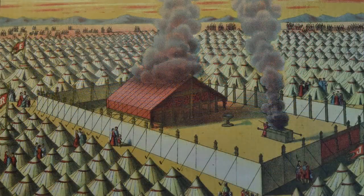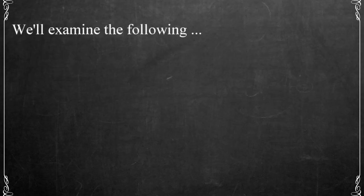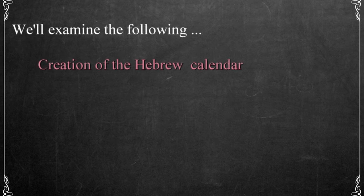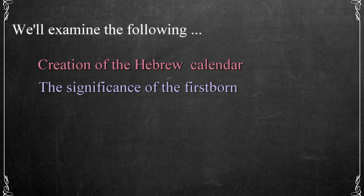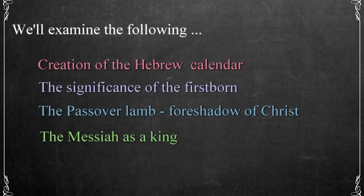The concealment of that plan was done through a variety of symbolic means expressed in prophetic devices that were verbal and physical. These elements provide the common thread that unifies the scriptures, and these connections make the Bible unique and set it apart from other religious systems of belief. We'll examine the following topics as we investigate the Passover, which include the creation of the Hebrew calendar, the significance of the firstborn, the Passover lamb as a foreshadow of Christ, and the Messiah as a king.